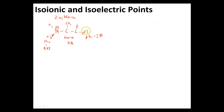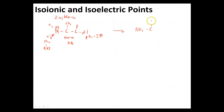You can picture that carboxylic acid at very, very low pHs — down around pH 1. We're going to be able to slap an extra proton on there, and we'll end up having NH3+, our carbon, CH3, and our carboxylic acid with its proton on. So that's the structure at very low pH.